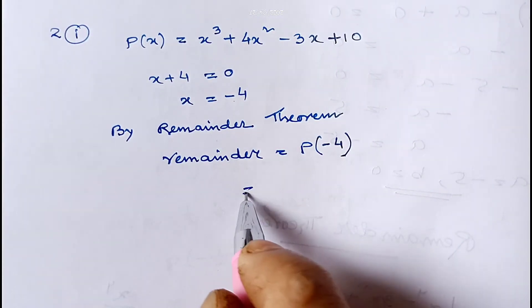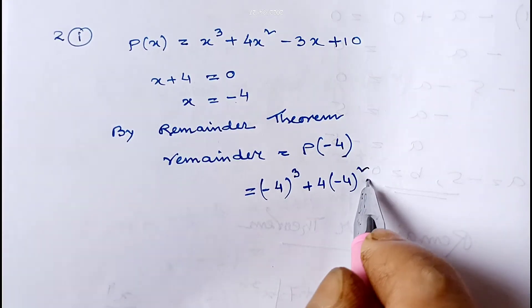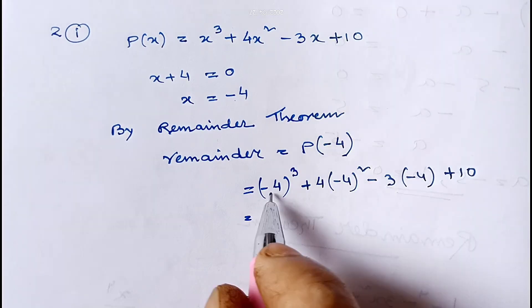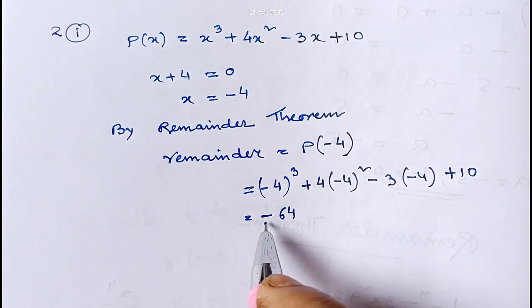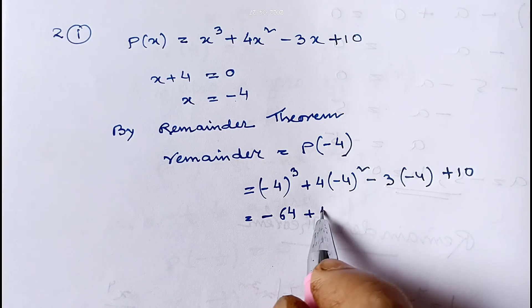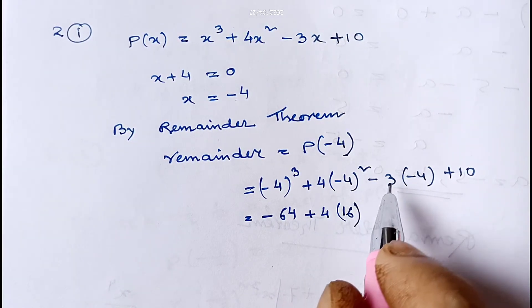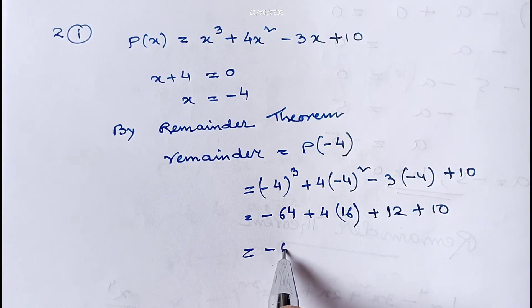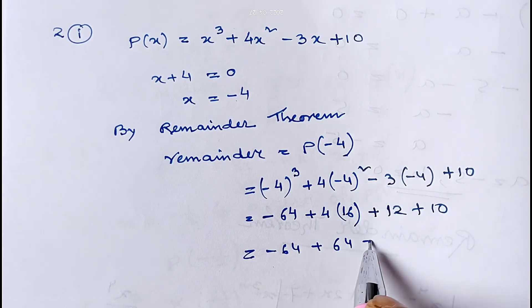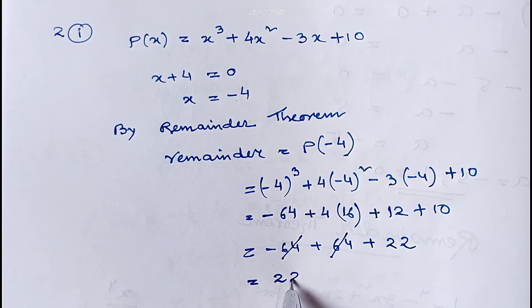So we replace x by -4: it will be (-4)³ + 4 × (-4)² - 3 × (-4) + 10. Since the power is odd, (-4)³ = -64. Since the power is even, (-4)² = +16, so 4 × 16 = 64. Then -3 × -4 = +12. So we get -64 + 64 + 12 + 10 = 22. Therefore the remainder is 22.